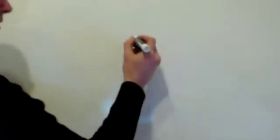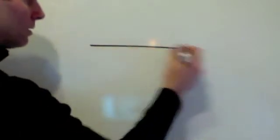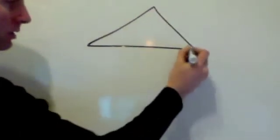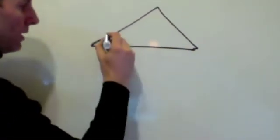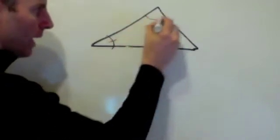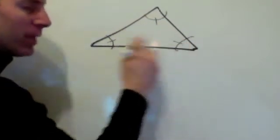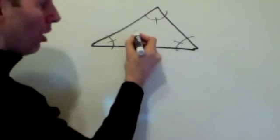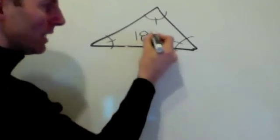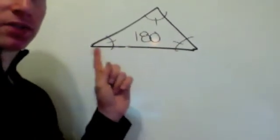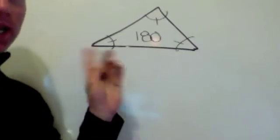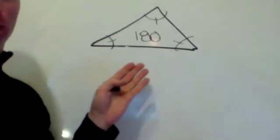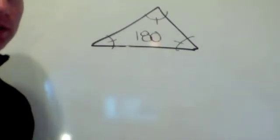The first one goes like this. The sum of the angles inside a triangle, the sum of those interior angles, whatever they are, whatever the combination is, they always add up to 180 degrees. So the sum of the interior angles of any three-sided polygon or triangle add up to 180 degrees.